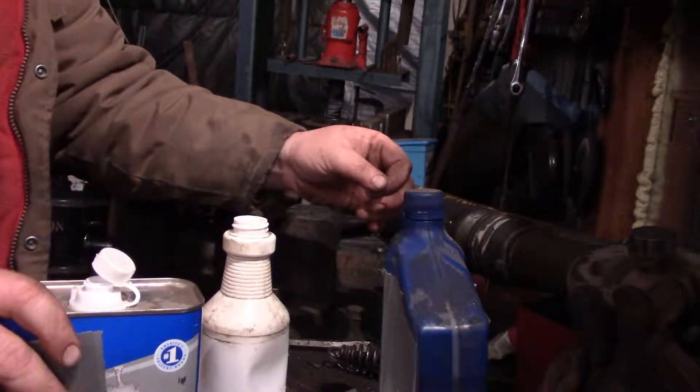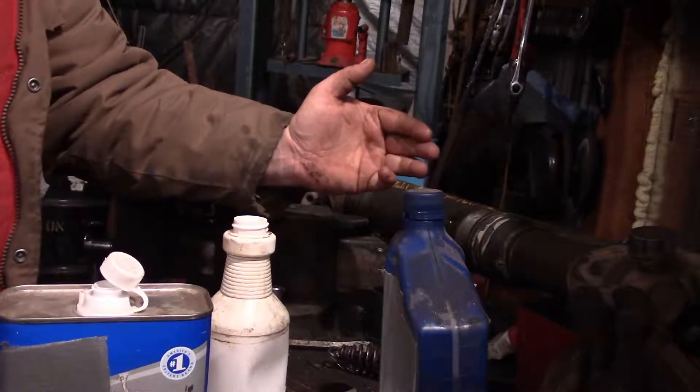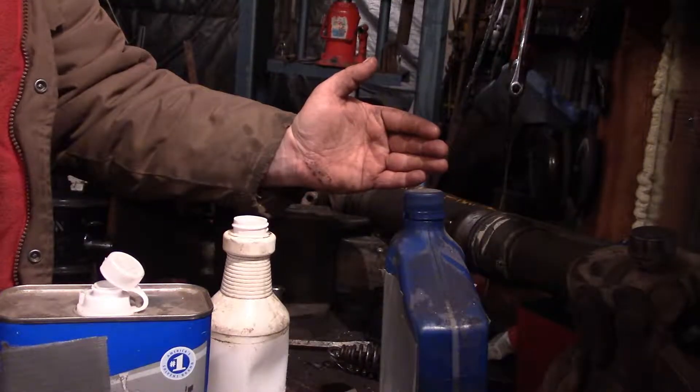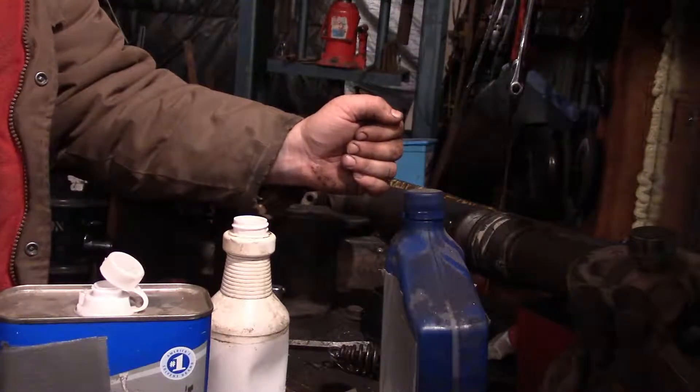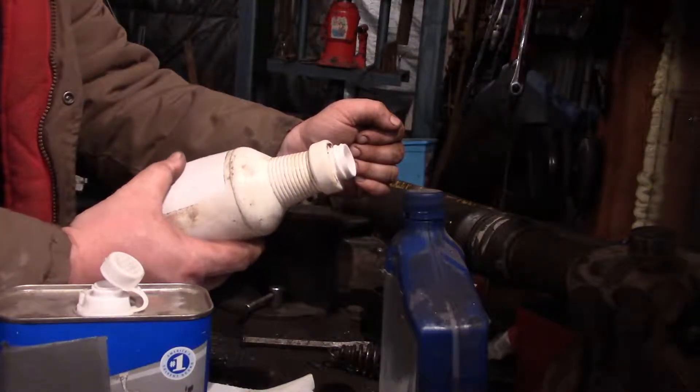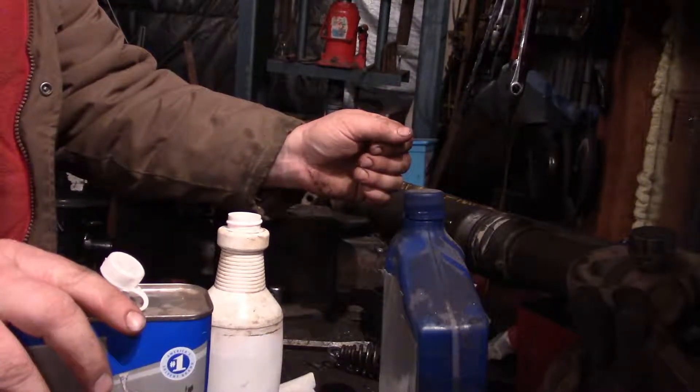But the hard part about this mix is trying to find a spray bottle that won't melt because acetone is great at dissolving plastic. So you might want to look for something, I think this is polyethylene, but I'm not sure, but it's an old spray bottle I've used for years for that.